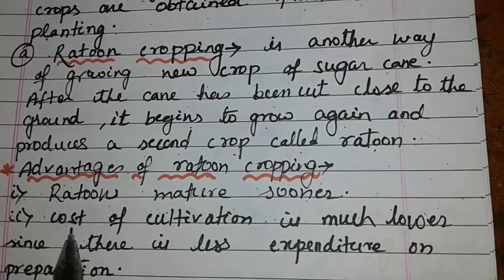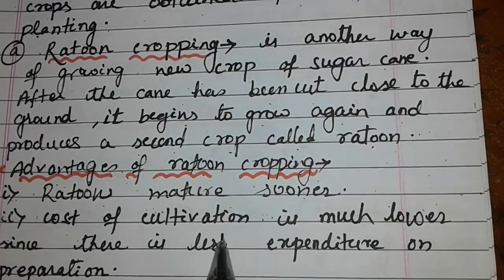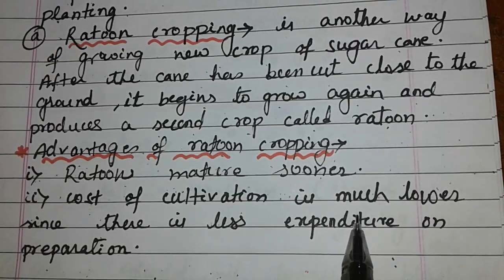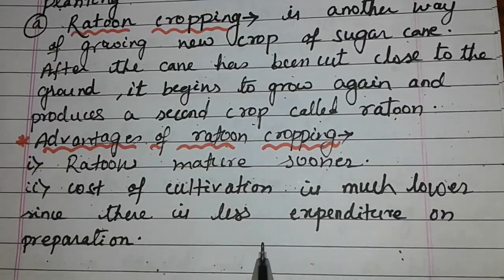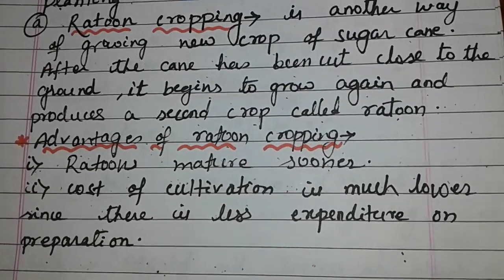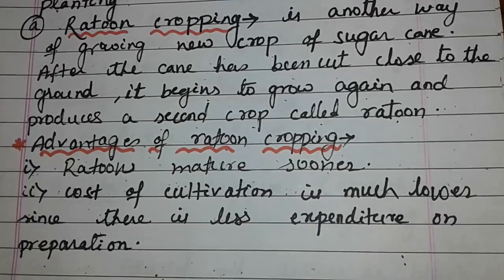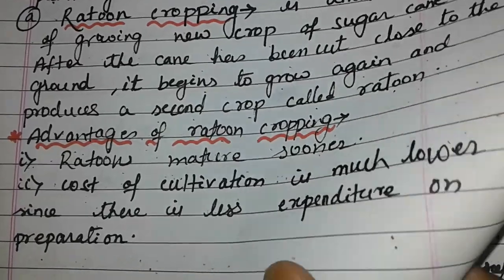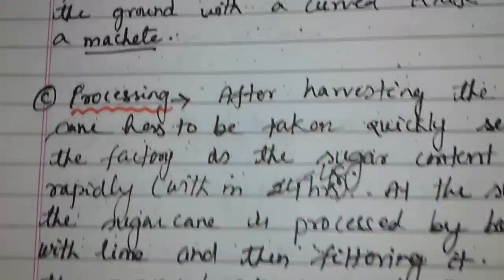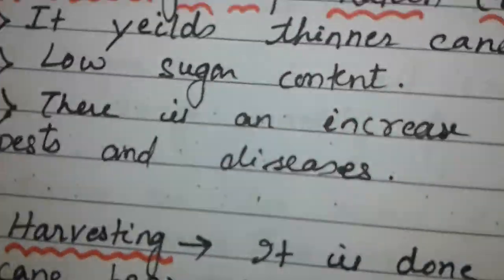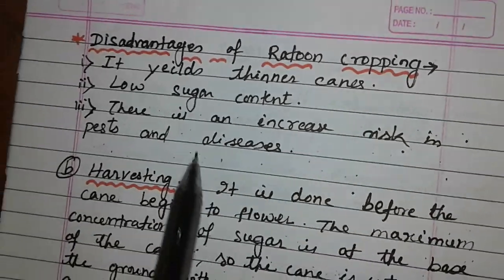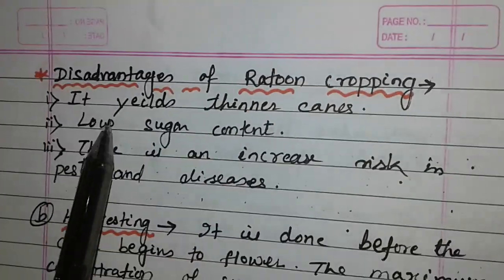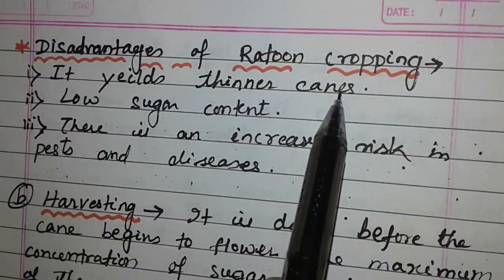Advantages of ratoon cropping: ratoons mature sooner, and cost of cultivation is much lower since there is less expenditure on preparation. Disadvantages of ratoon cropping: it yields thinner canes with low sugar content, and there is an increasing risk of pests and diseases.